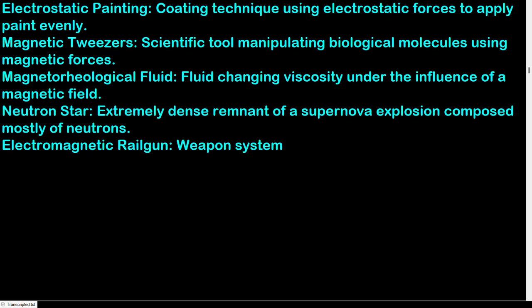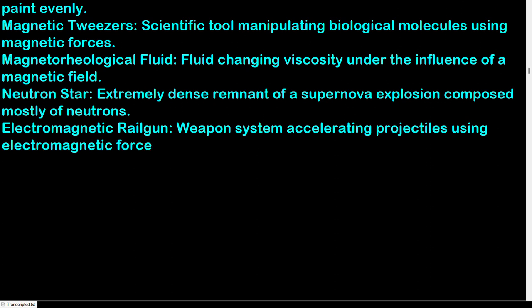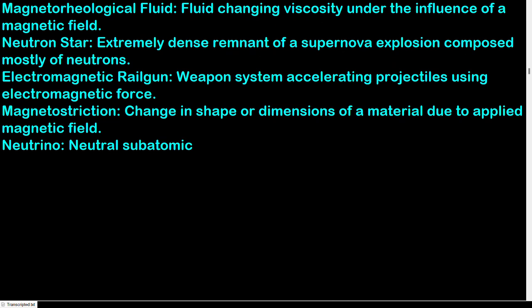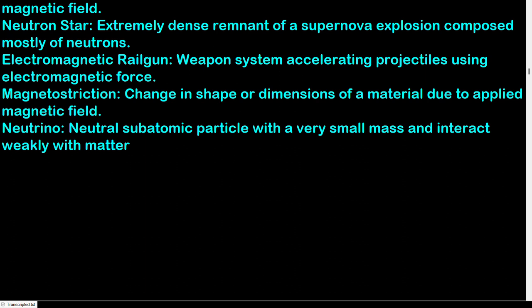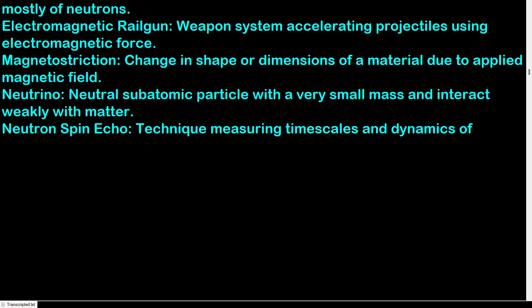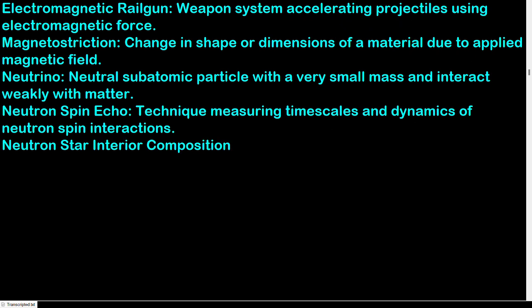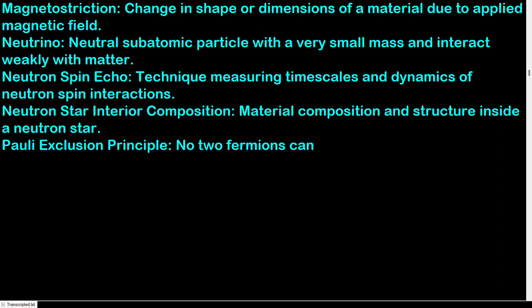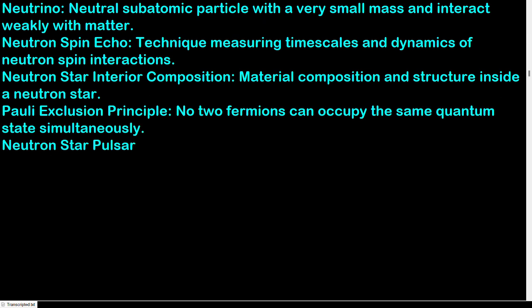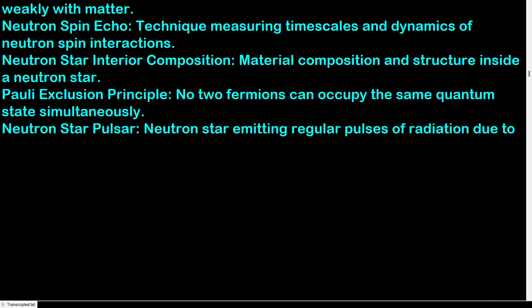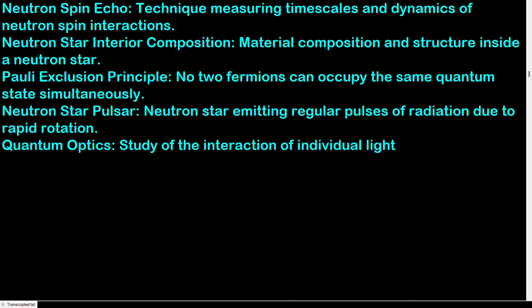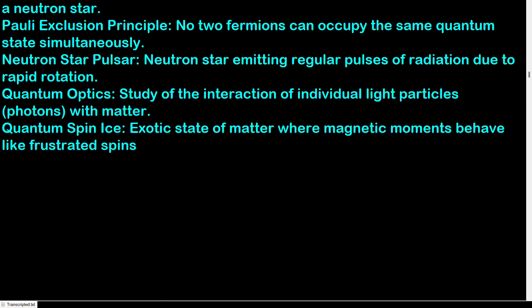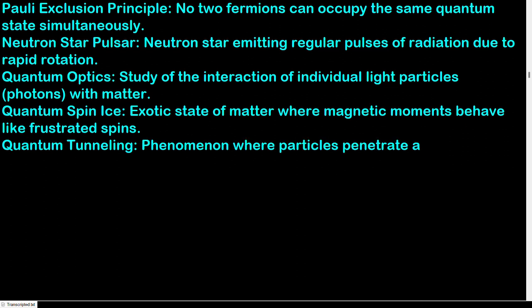Electromagnetic railgun: weapon system accelerating projectiles using electromagnetic force. Magnetostriction: change in shape or dimensions of a material due to applied magnetic field. Neutrino: neutral subatomic particle with very small mass, interacting weakly with matter. Neutron spin echo: technique measuring time scales and dynamics of neutron spin interactions. Neutron star interior: composition and structure inside a neutron star. Pauli exclusion principle: no two fermions can occupy the same quantum state simultaneously. Neutron star pulsar: neutron star emitting regular pulses of radiation due to rapid rotation. Quantum optics: study of the interaction of individual light particles (photons) with matter. Quantum spin ice: exotic state of matter where magnetic moments behave like frustrated spins.